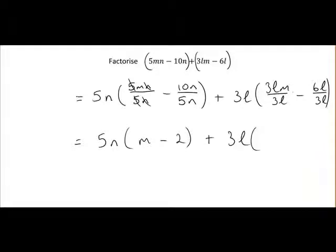3lm divided by 3l, so the 3's cancel and the l's cancel, we're just left with m. 6l divided by 3l, which leaves us with 2.